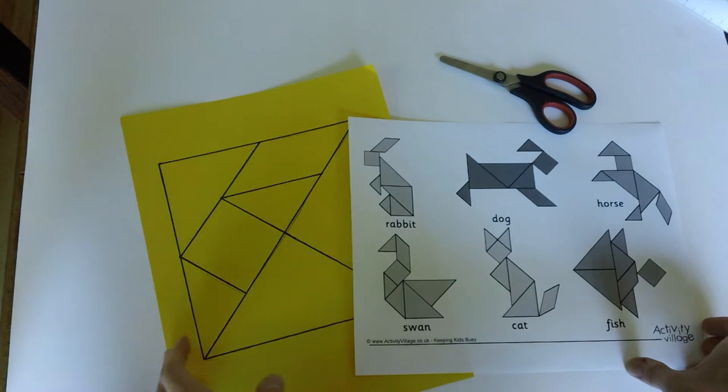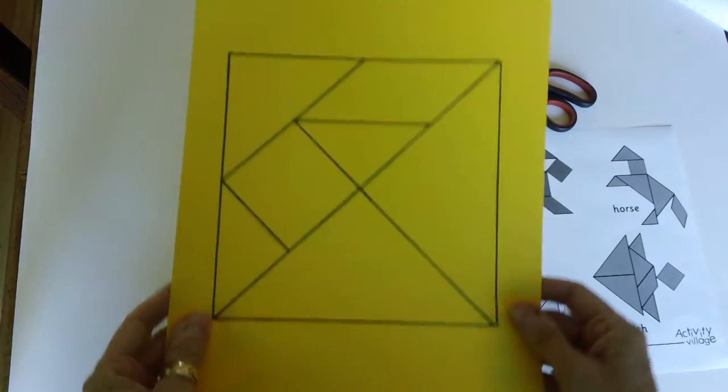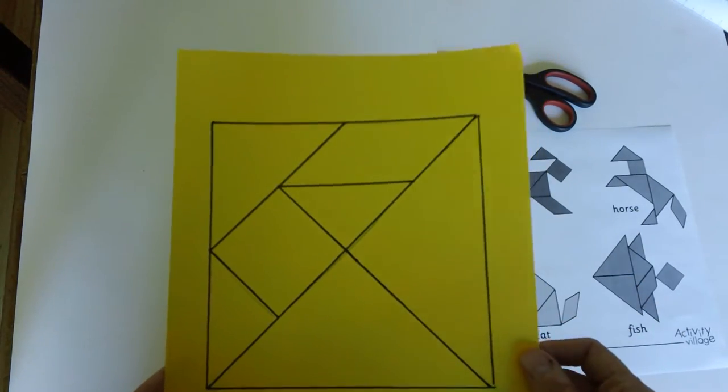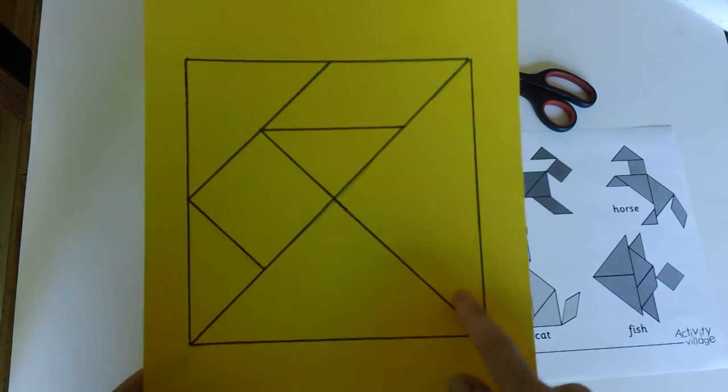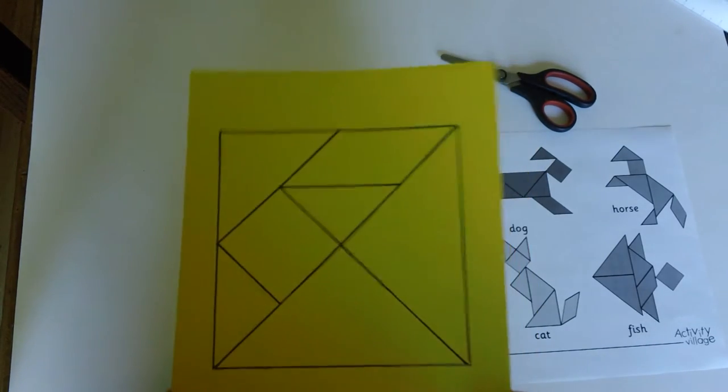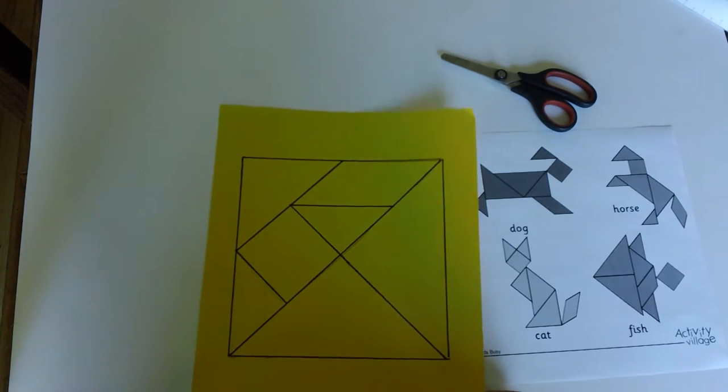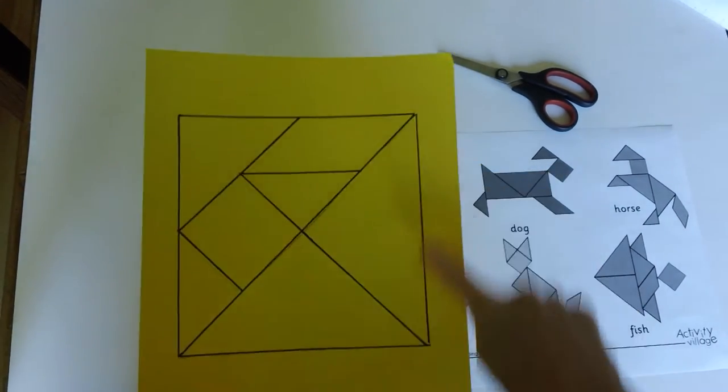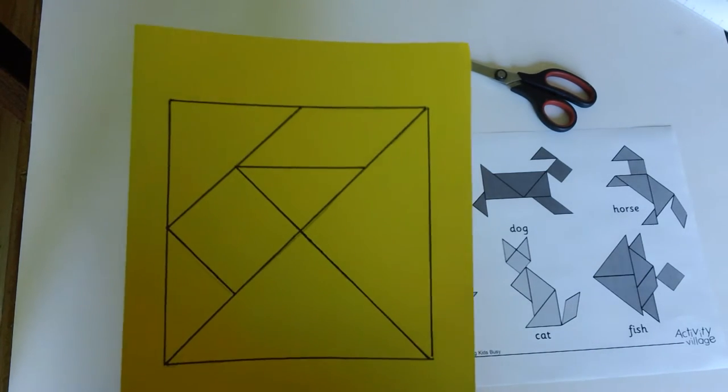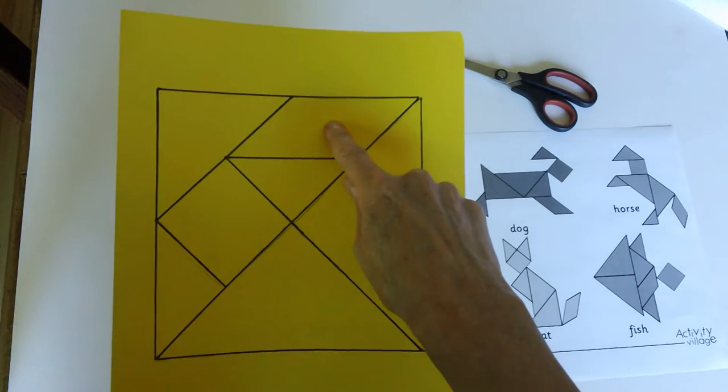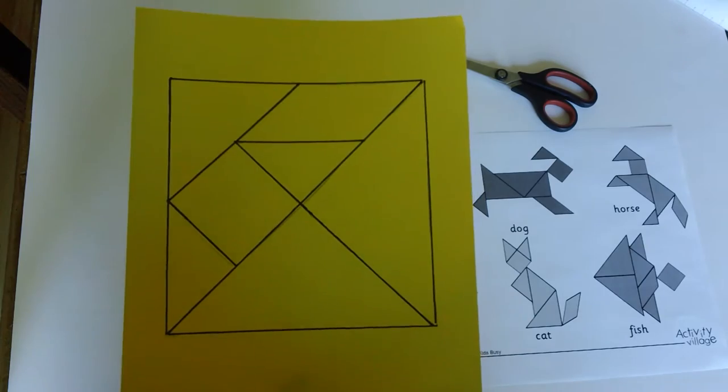We're going to talk about tangrams today. Each one of you is going to get a piece of colored construction paper with a tangram drawn on it. A tangram is a traditional Chinese puzzle made of a square divided into seven pieces. There's one parallelogram and five triangles and one square.